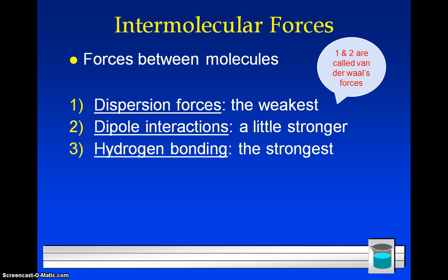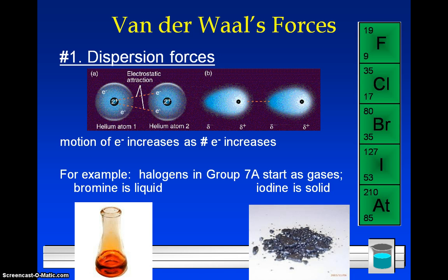There's dispersion forces, dipole interactions, and hydrogen bonding. And they all are very weak compared to the force of a bond. But in terms of each other, dispersion forces are the weakest, and then hydrogen bonds are the strongest. Now the first two — dispersion forces and dipole interactions — are also called van der Waals forces. So I'm going to go in detail about these three intermolecular forces.